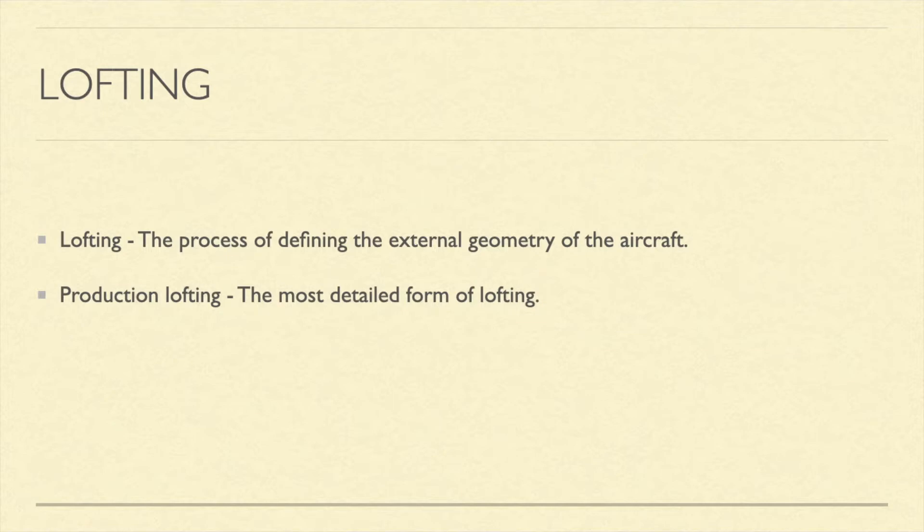It provides an exact mathematical definition of the entire aircraft. In machine designing, two extreme permissible sizes of a part between which the actual size is contained is called a limit. Production lofting is so accurate that the range of the limit while designing is within a few hundredths of an inch, maybe even less. This shows that you can design and fabricate different parts in different plant sites and they will still fit together perfectly during final assembly.